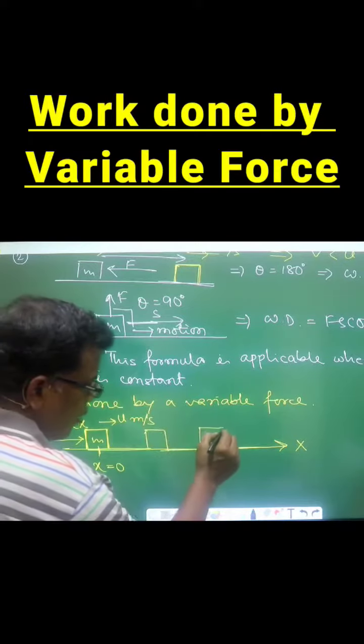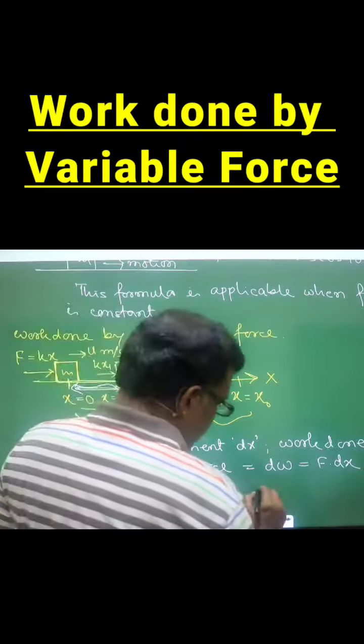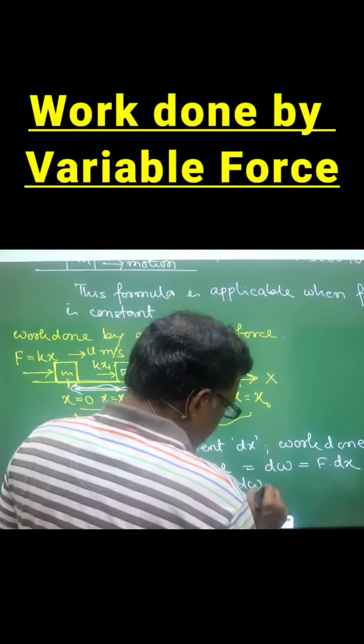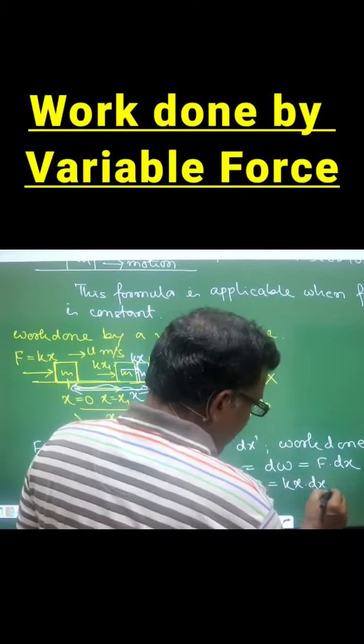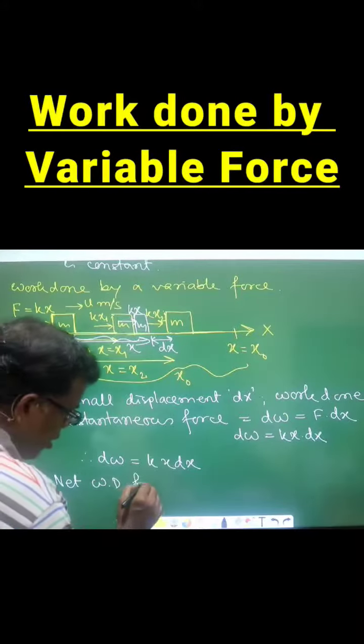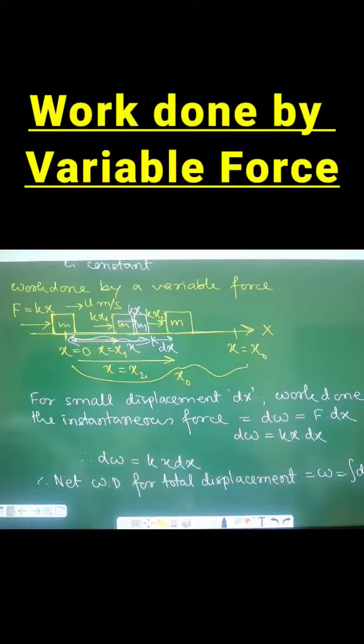ho ga us per magnitude of force b alag ho ga. Jo force wo dx displacement kara raha hai wu force kya ho ga k into x that into dx. Therefore net work done for total displacement that is equal to W which can be obtained by integrating the small work done.